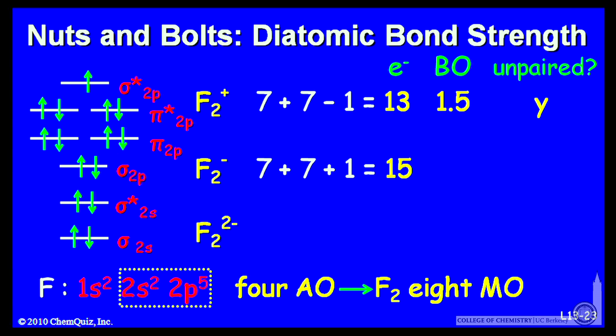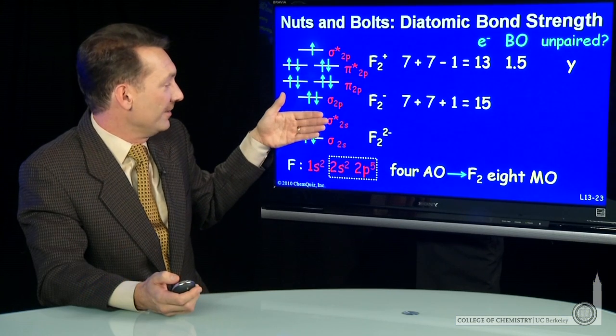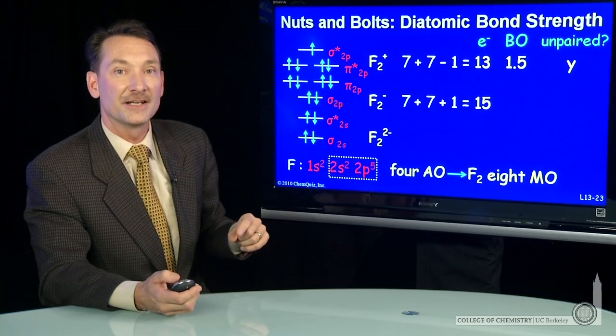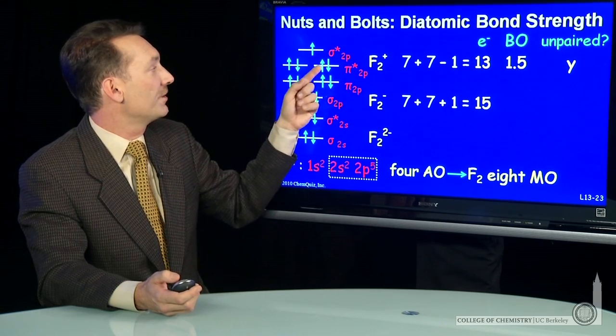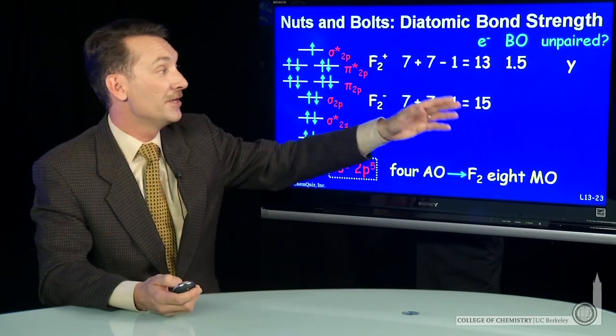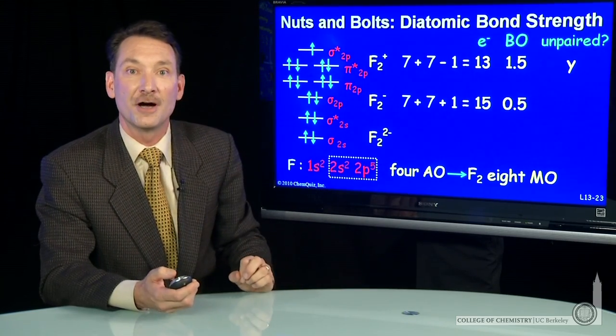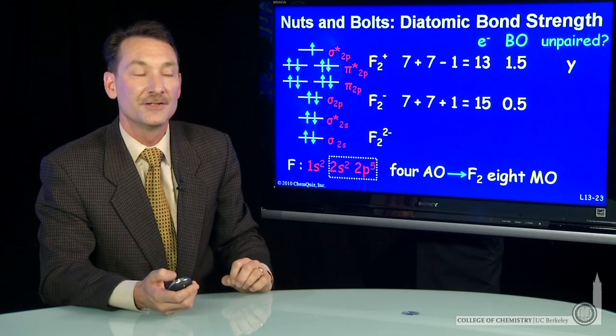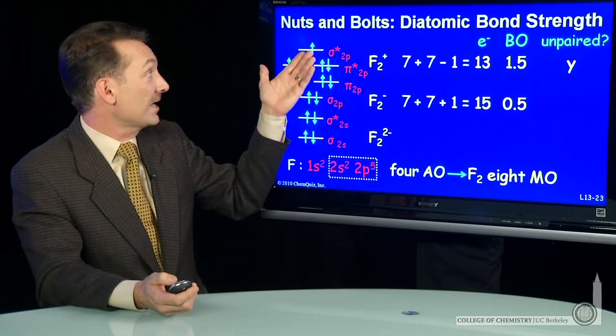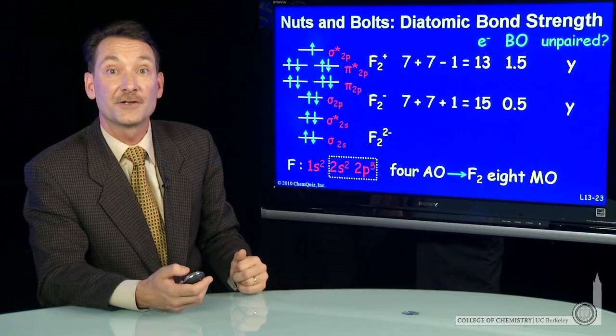Now what's my bond order? Those two add to 0. And I have six bonding electrons and five antibonding electrons. The difference is 1 divided by 2, a bond order of 1 half. So a weaker bond here in F2 minus. Is it paramagnetic? Yeah, there's an unpaired electron.